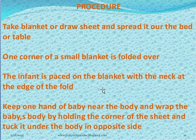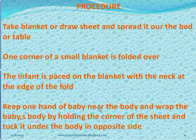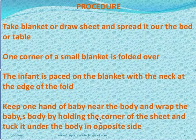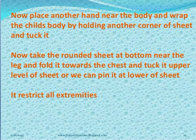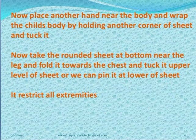The infant is placed on the blanket with the neck at the edge. Keep one hand of the baby near to the body, wrap around, and tuck it. Wrap the baby in the blanket by holding the corner of the sheet and tuck in the opposite side. Then place the other hand near to the body and wrap the other side.